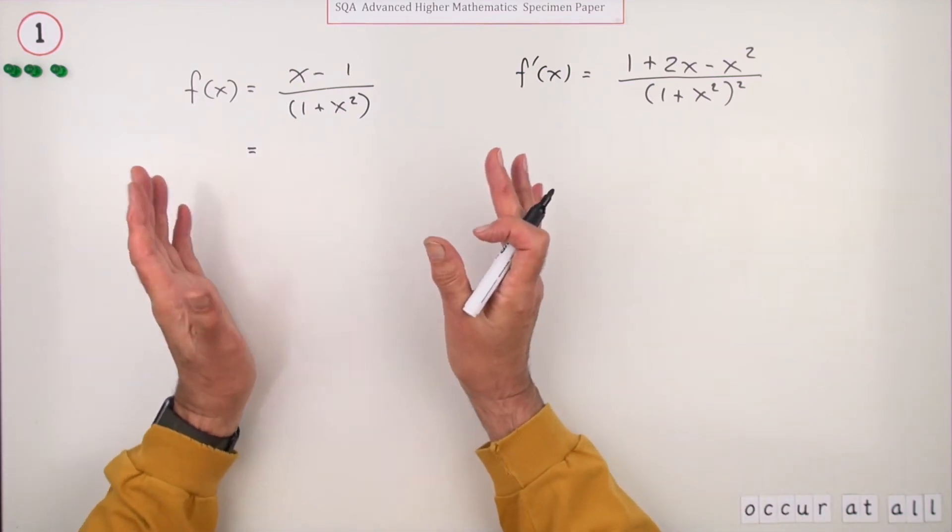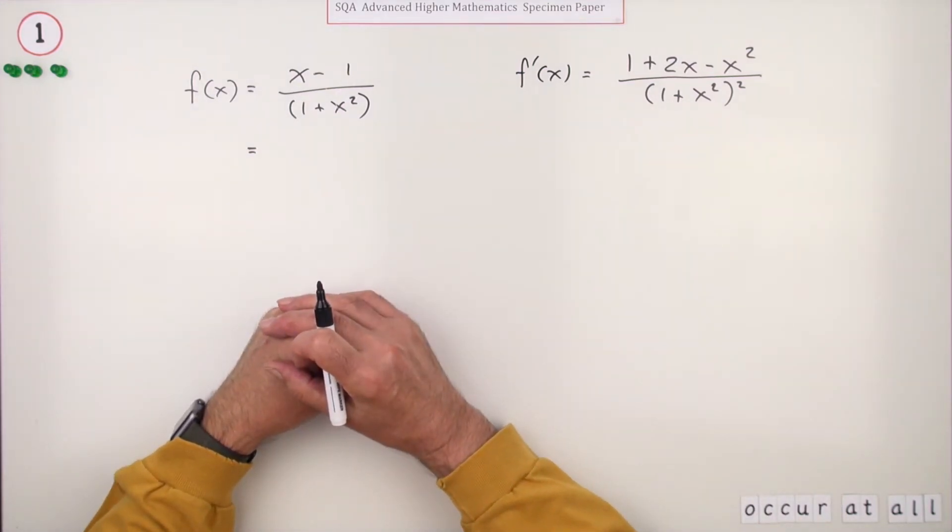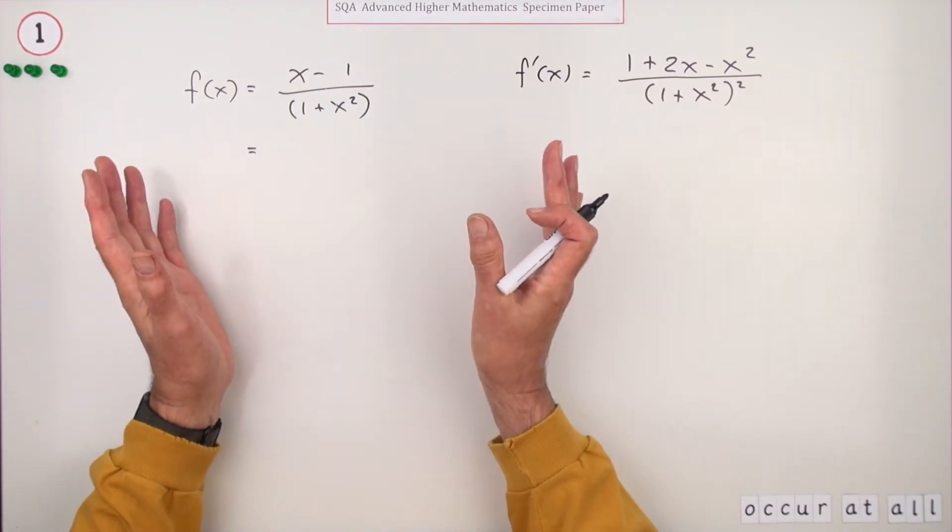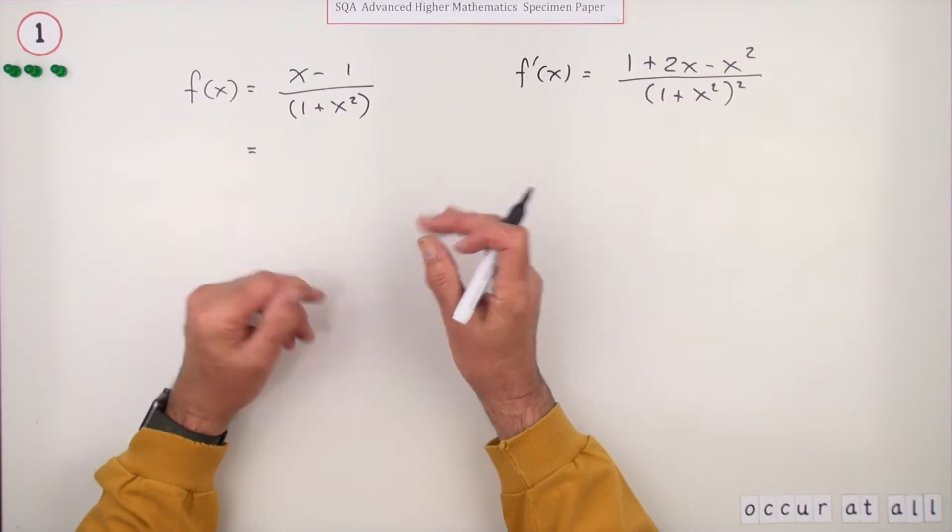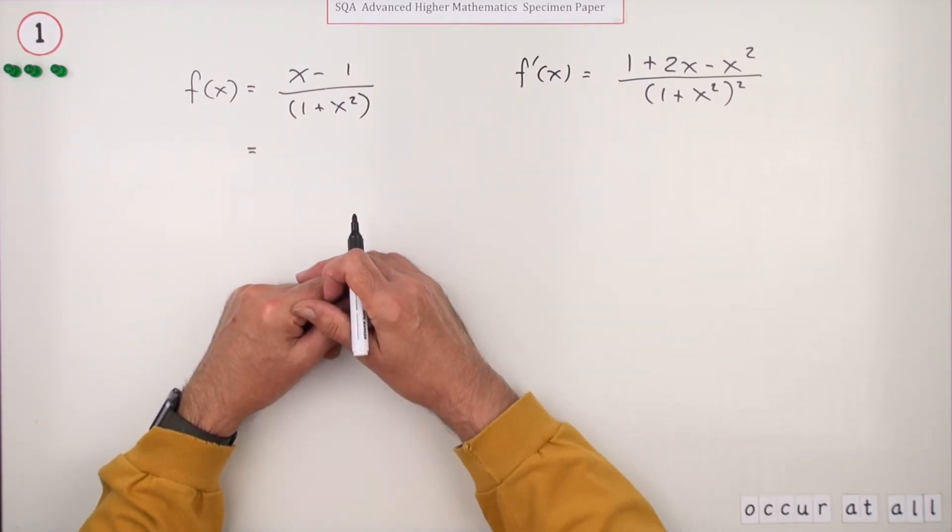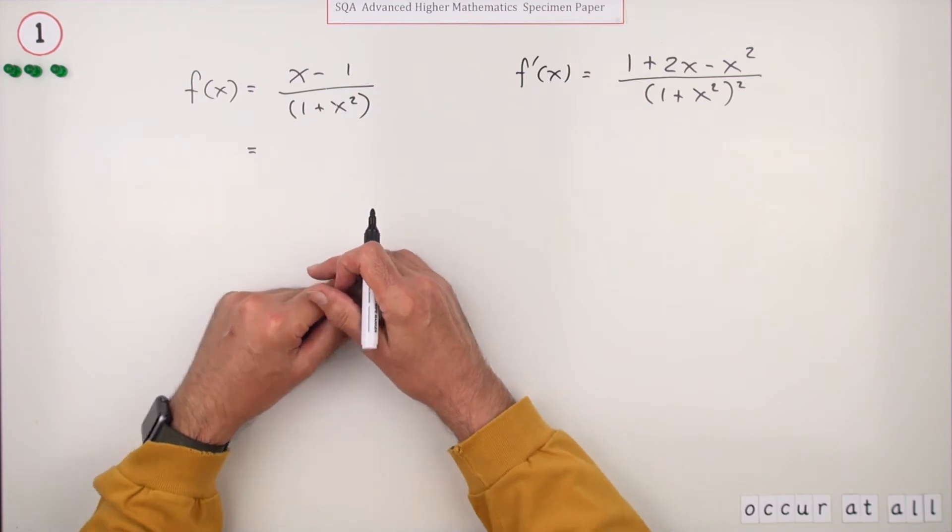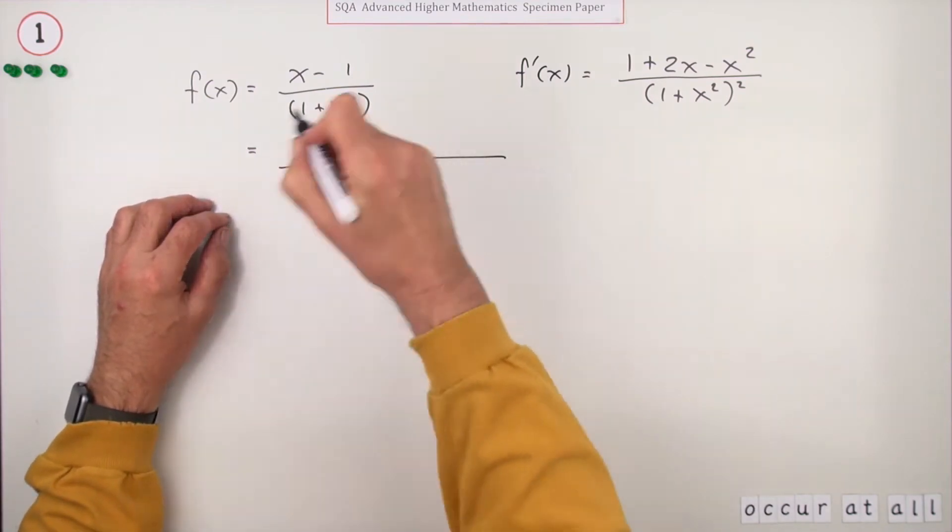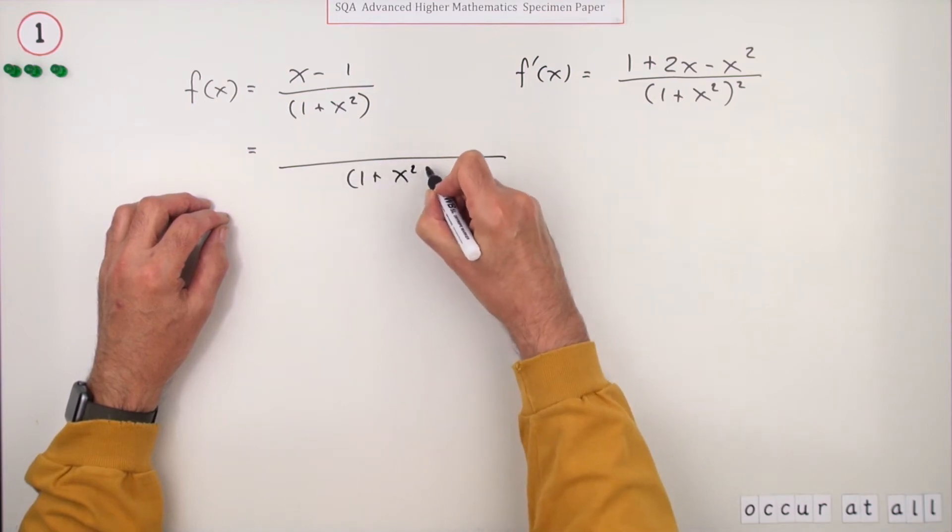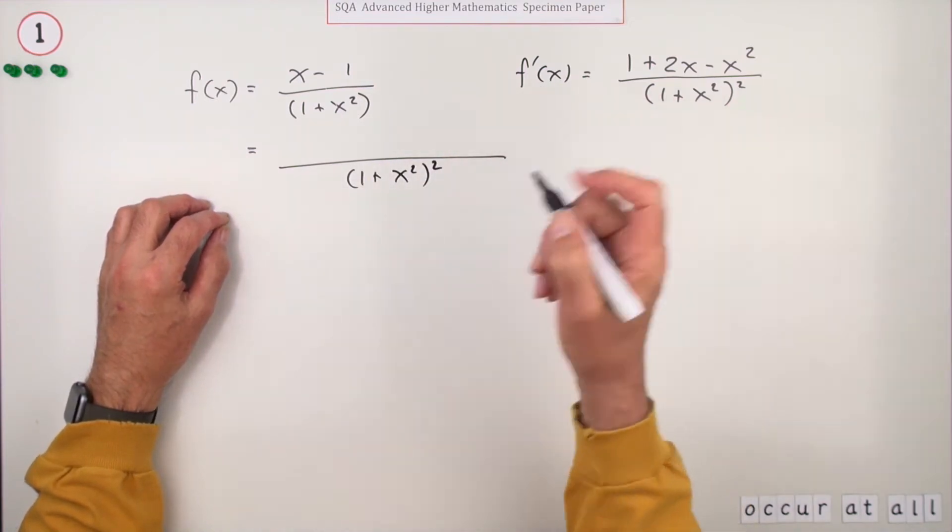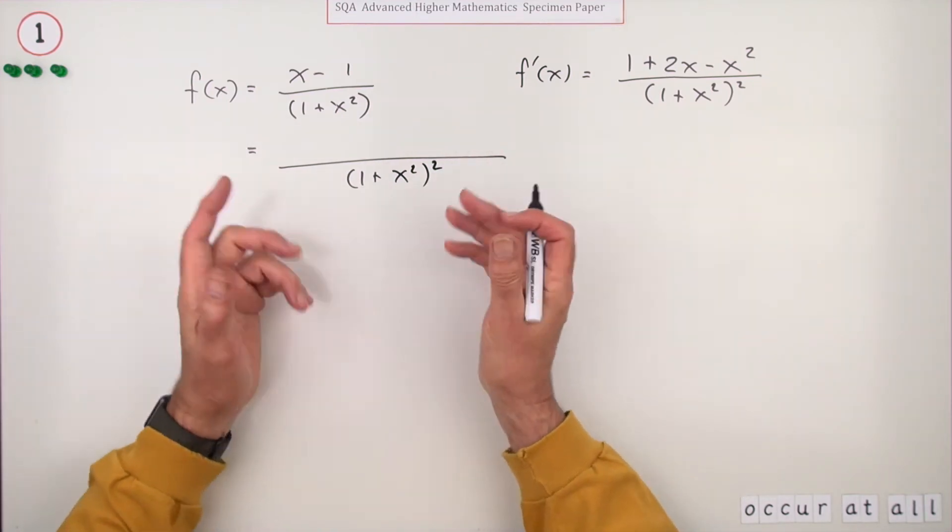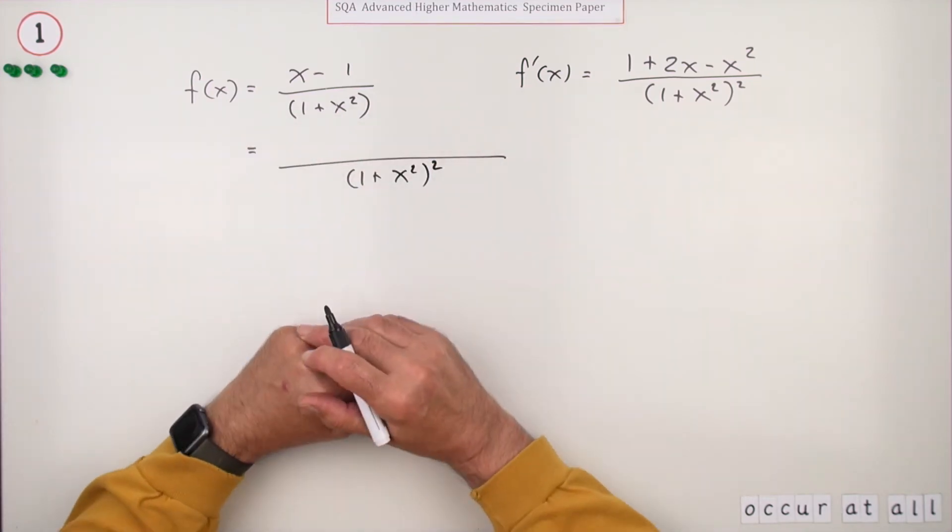So the first mark would normally be knowing to use the quotient rule. Then you'd think the next mark would be for carrying out the quotient rule, the pattern for the quotient rule. Then the third mark would be tidying it up into the answer. But the answer's there already. And then what they've put down is: first mark knowing to use the quotient rule. Well there it is there, look, square the denominator in case you'd forgotten, it tells you. And start to use the quotient rule for the first mark, that probably means just do one of the differentiations.